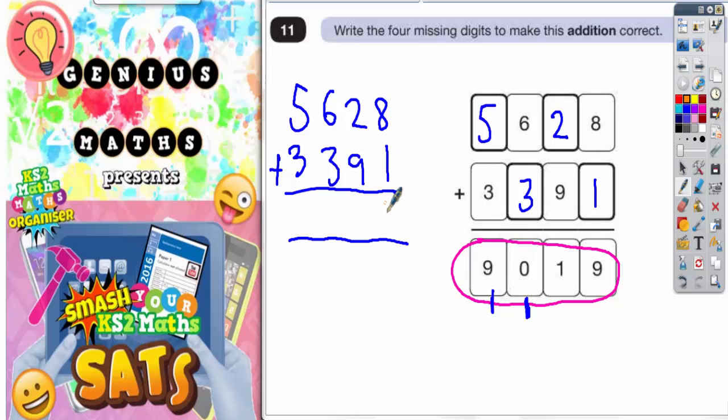8 plus 1 is 9. 2 plus 9 is 11. That's what we're talking about getting an answer that ends in a 1. So 2 plus 9 is 11. Put the 1 in, carry the 1.